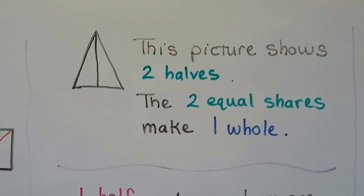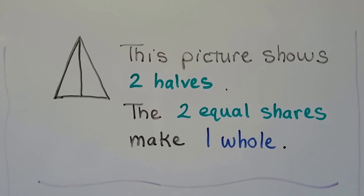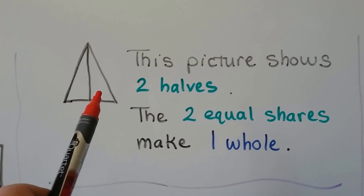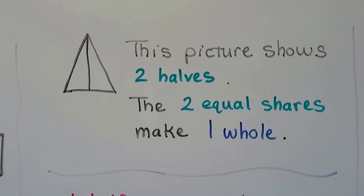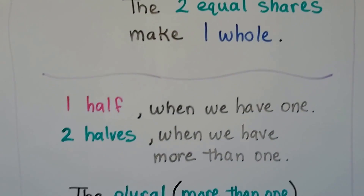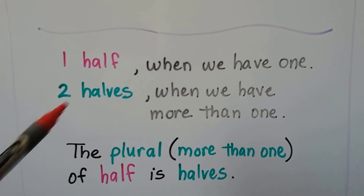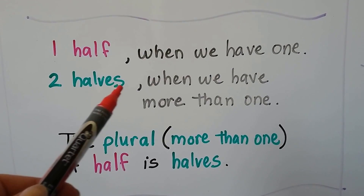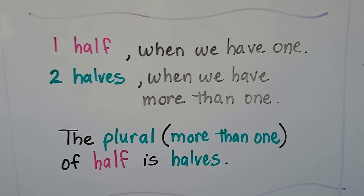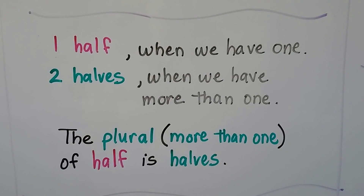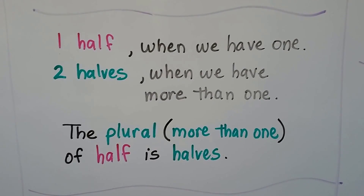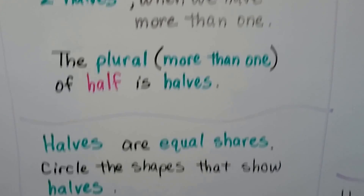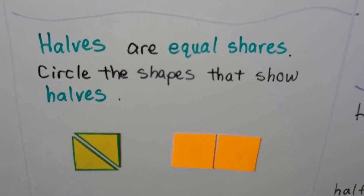This picture shows two halves. The two equal shares make one whole — a half and a half together make one whole. One half: when we write the word, it has an F. Two halves: the F turns into V-E-S when we have more than one. The plural, which means more than one, of half is halves. Halves are equal shares.